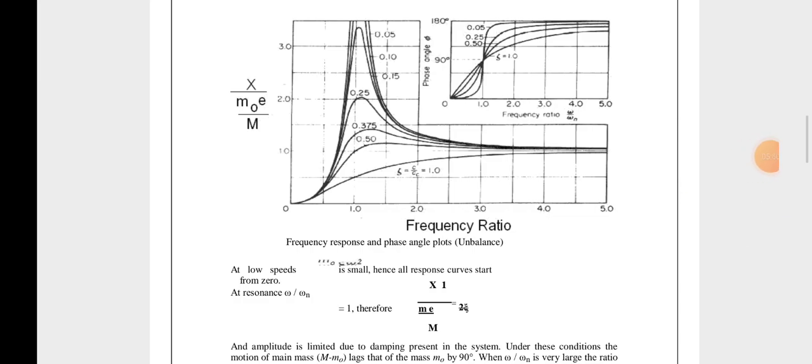Constant, may be remains constant for the case ζ equals c/cc, I mean the different values. This is all about the frequency ratio versus X/(m0 e/M), while another - that is frequency ratio versus the phase angle φ.